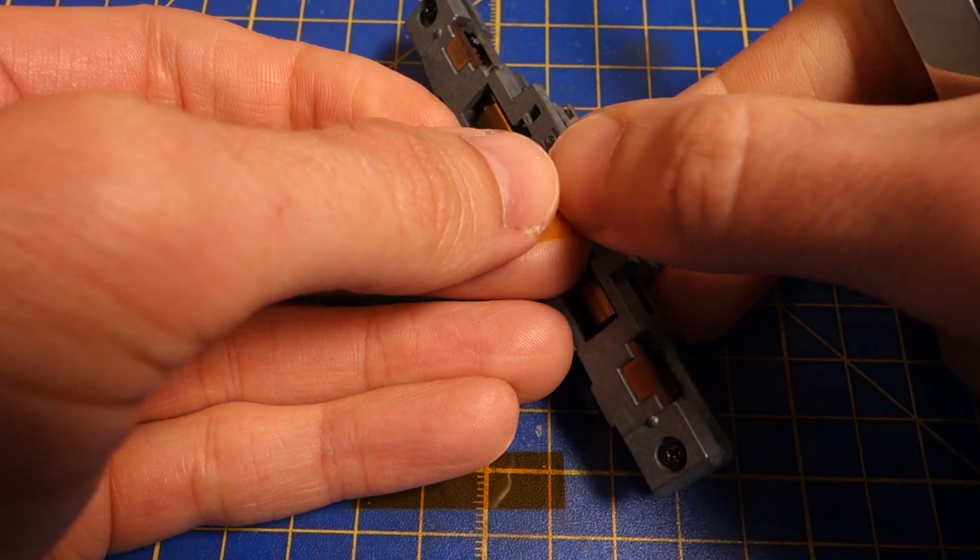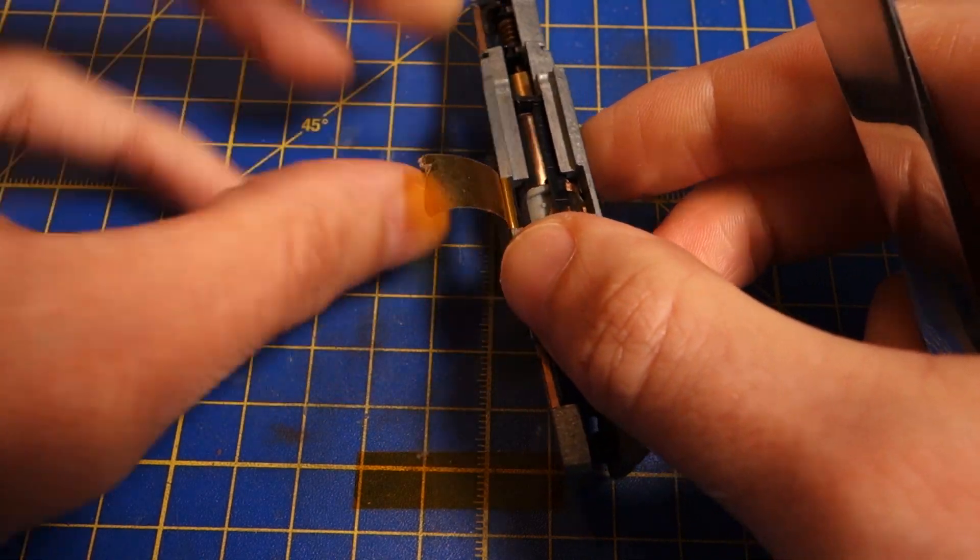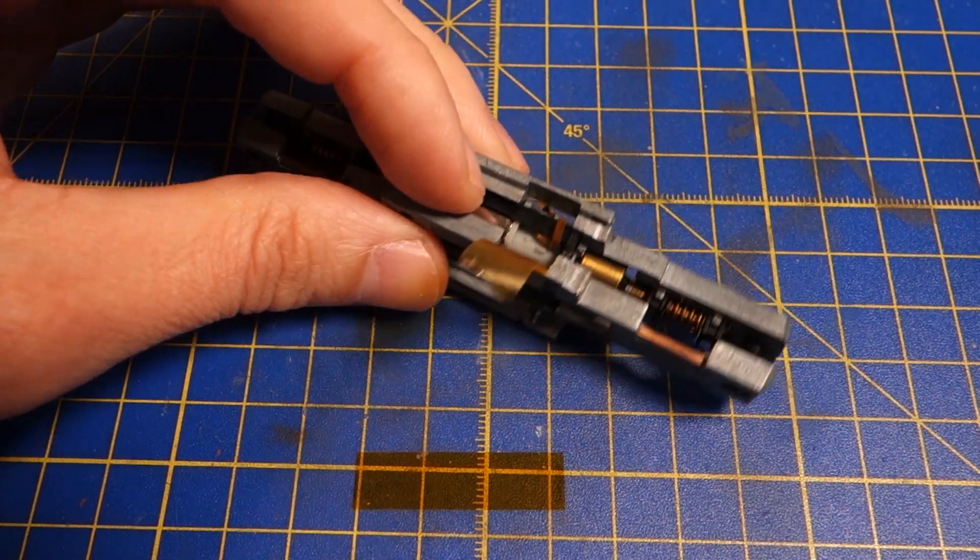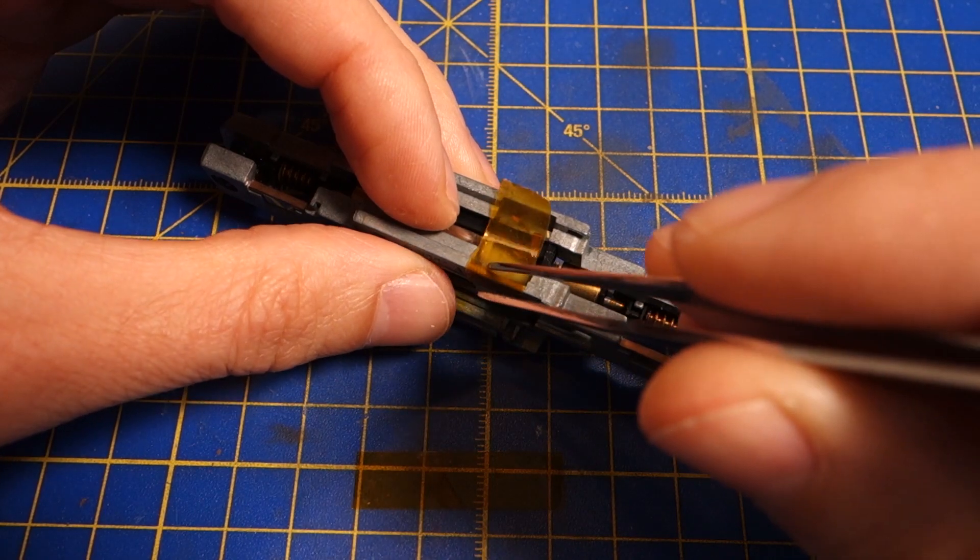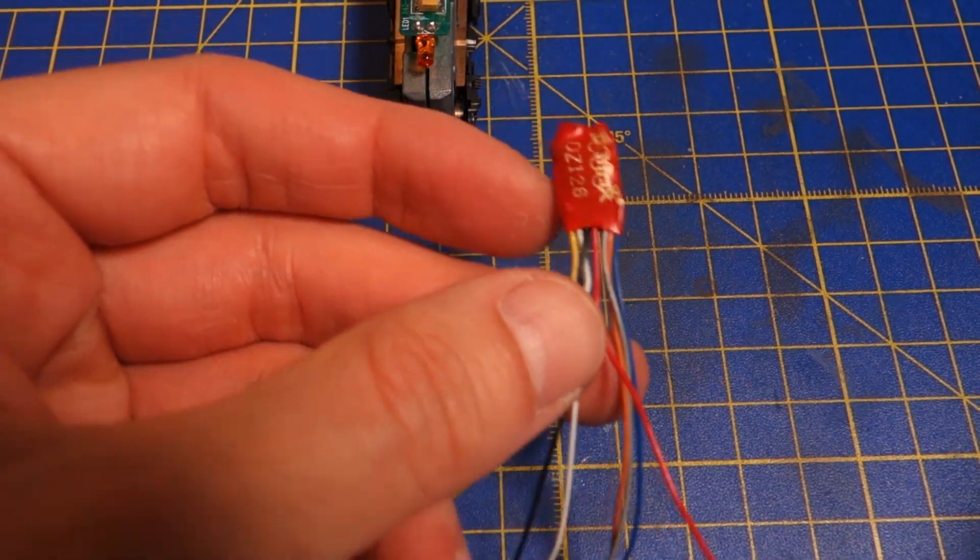It's also possible to solder the decoder directly to the contact strips of the motor, but I'm doing this conversion for a friend of mine and don't want to obstruct the option to use a board replacement decoder later on. So let's pop the board back into the frame and hook up all the connections.